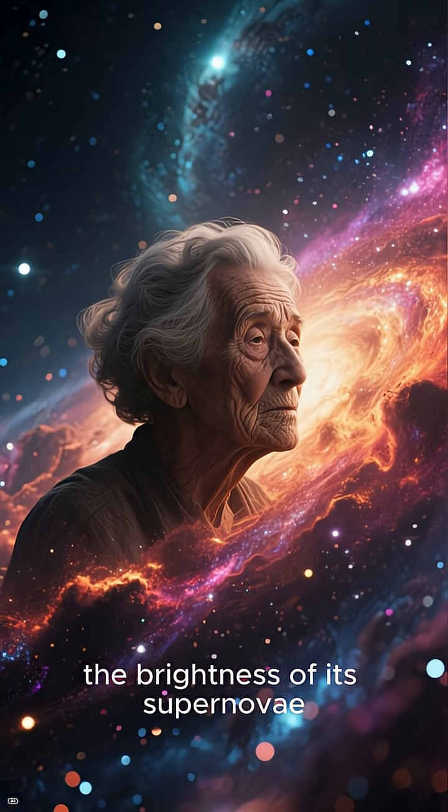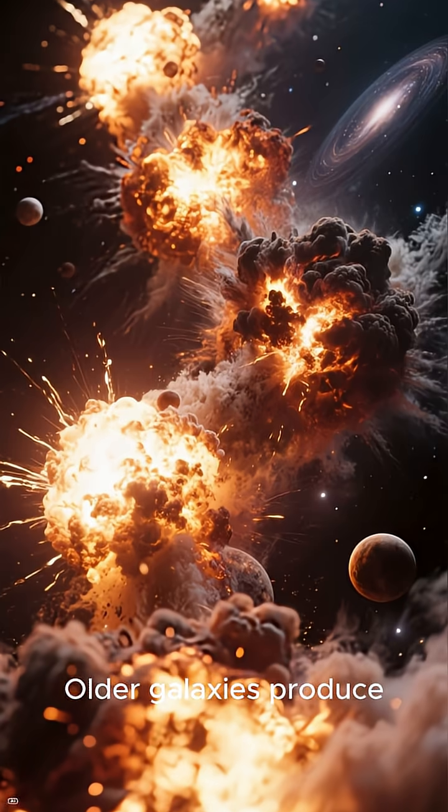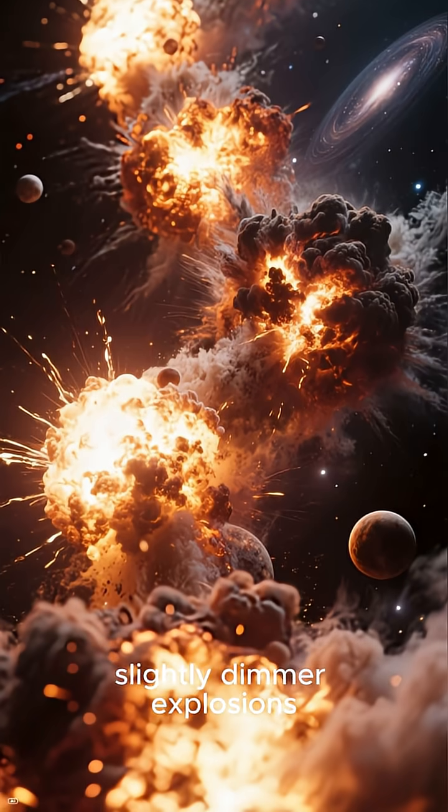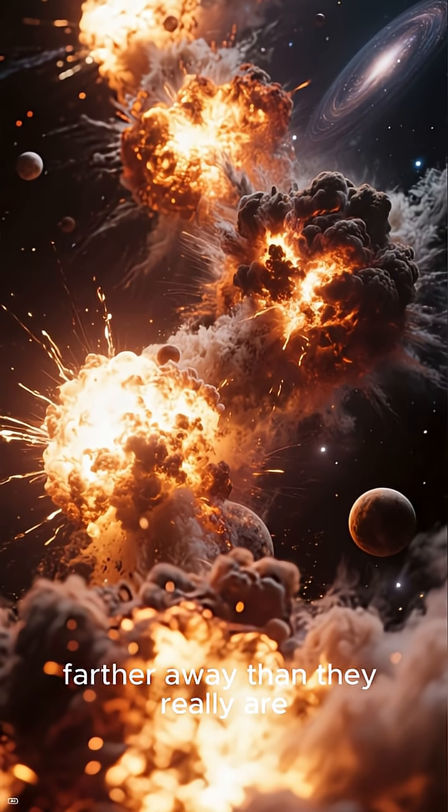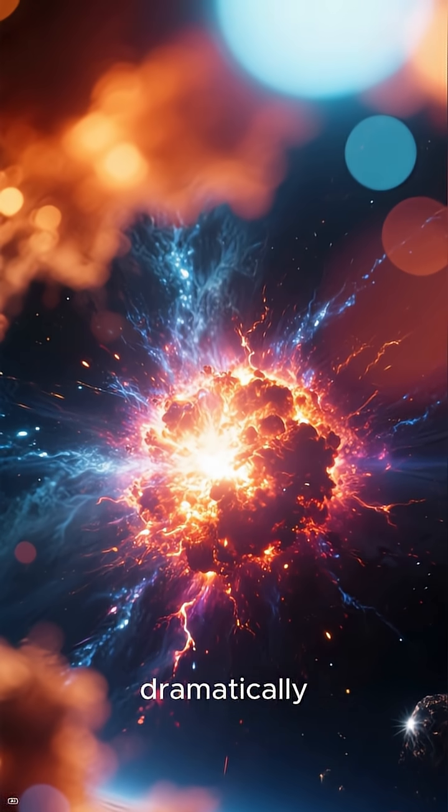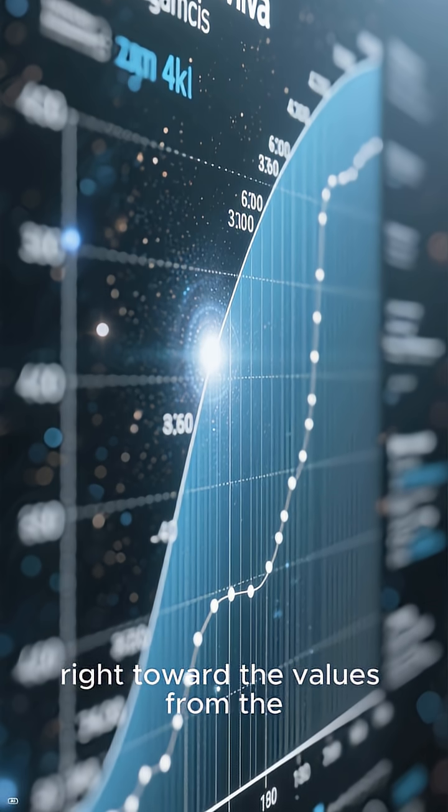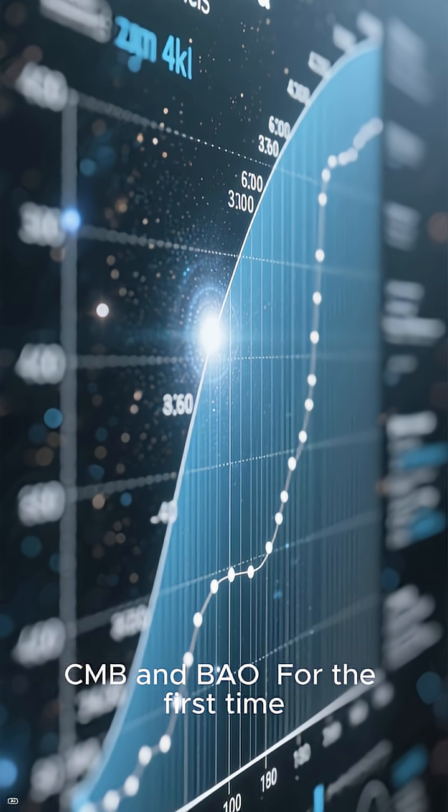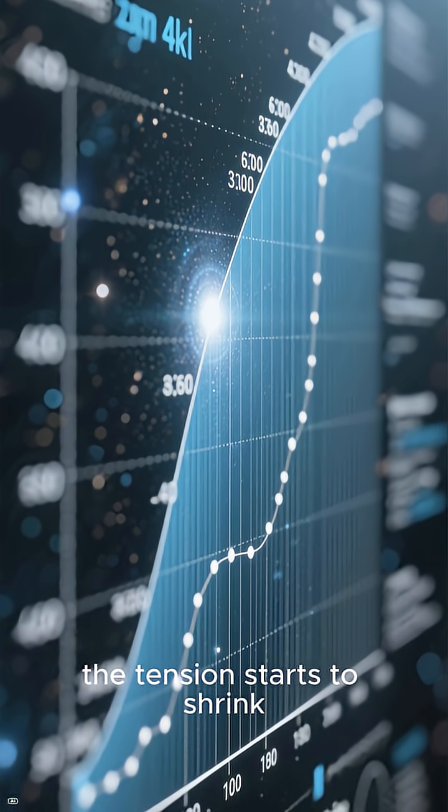The age of a galaxy affects the brightness of its supernova. Older galaxies produce slightly dimmer explosions, meaning they appear farther away than they really are. When scientists correct for this effect, the supernova results shift dramatically, right toward the values from the CMB and BAO. For the first time, the tension starts to shrink.